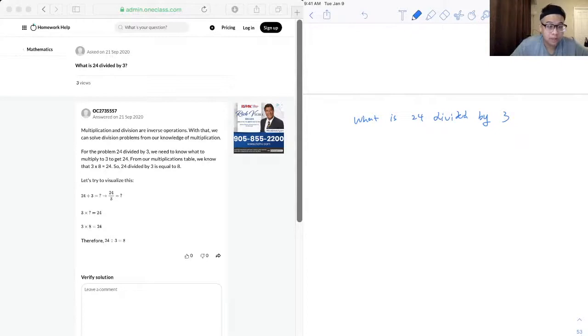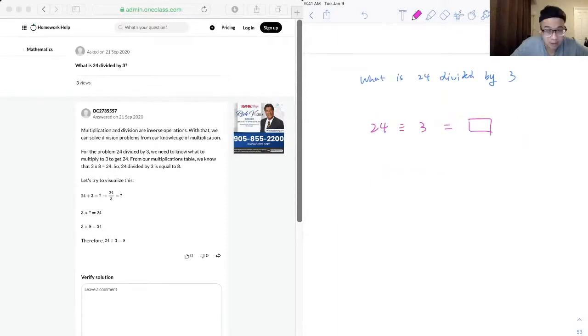So, for the example, 24 divided by 3, we just need to think what multiplied to 3 will get 24.